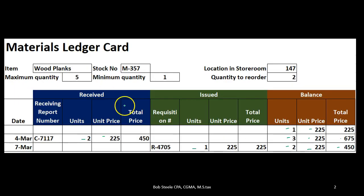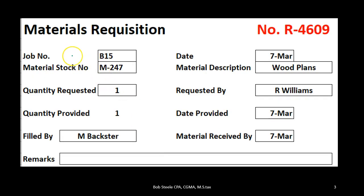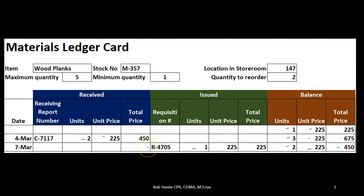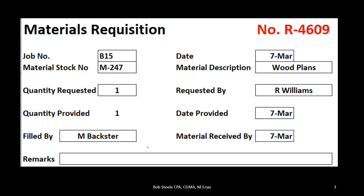The requisition form is used when the factory needs materials from the warehouse. In a large company, the work-in-process department must formally requisition the materials. The form is also used as a supporting document when creating the job cost sheet — so the requisition serves both to remove materials from the warehouse and to apply costs to a specific job.